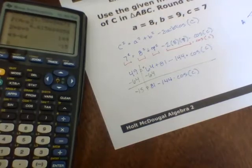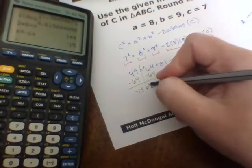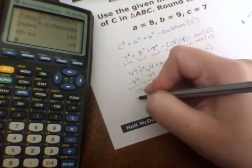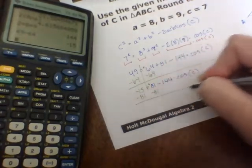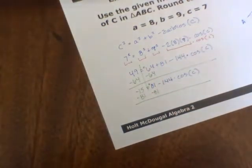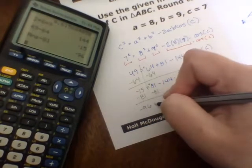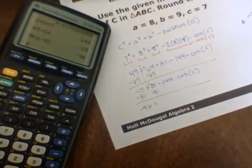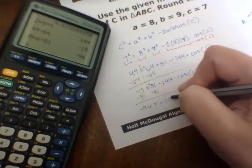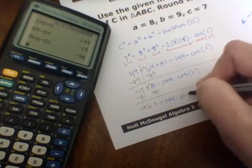And all that still equals the rest of this, which is 81 minus 144 times cosine of C. All right, then the next step is going to be subtracting this positive 81. So subtracting 81 leaves you with negative 96.